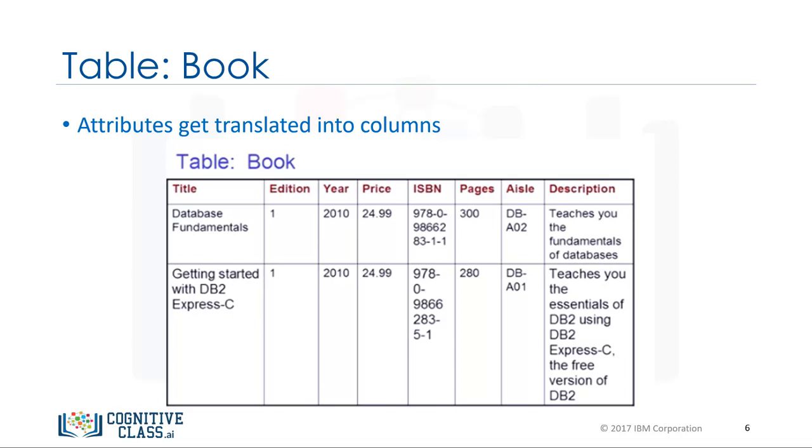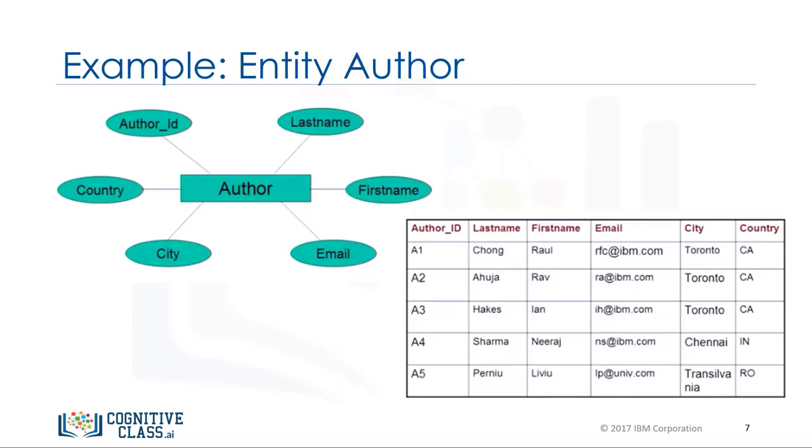Later we add some data values to each of the columns which completes the table form. For the Author example, the Entity Author becomes the table and the attributes get translated to columns in the table. Adding some data values into the columns completes the table.